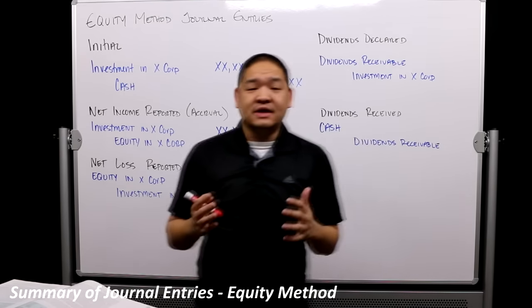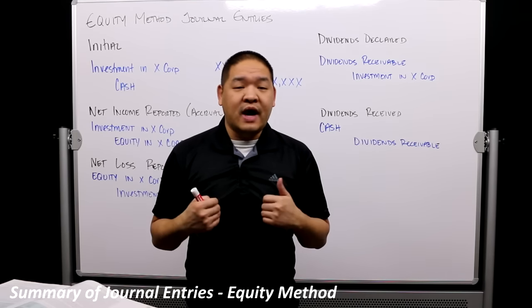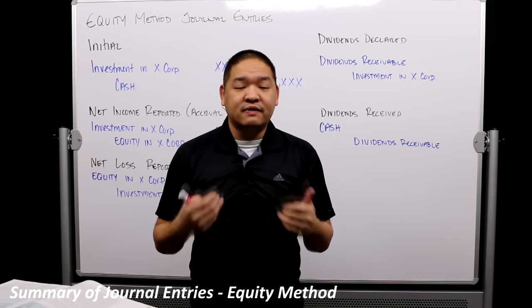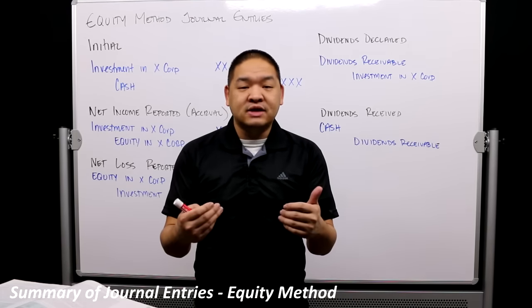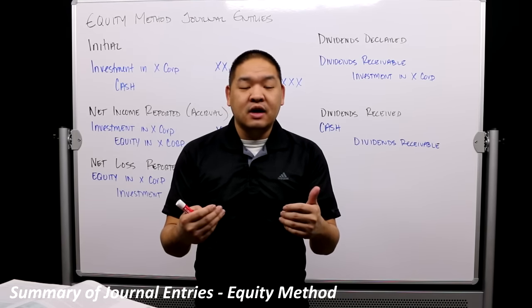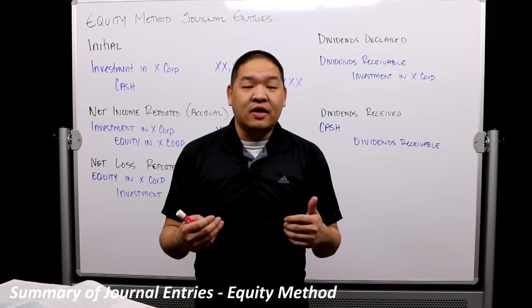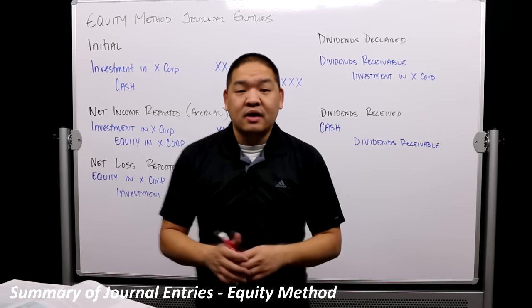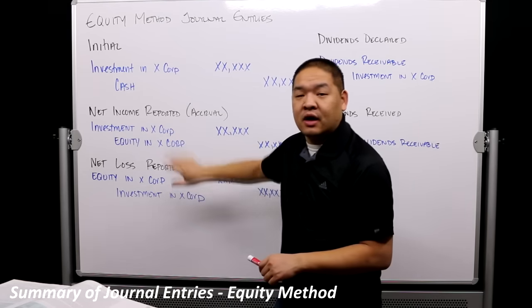The other big thing that could happen is a dividend is paid. We might have significant control over when the dividend gets paid and how much it is, so we can't rely on that as income — that's why we handle dividends with separate journal entries.